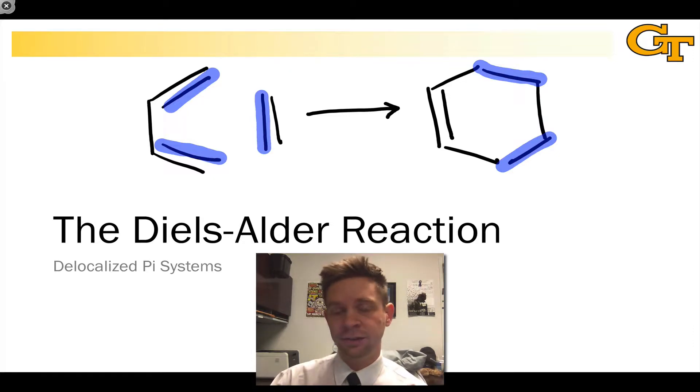It's what we call a pericyclic reaction. In this series of videos, we're going to explore the Diels-Alder reaction in detail. It has very high synthetic utility because it builds up a complex molecular framework, a six-membered ring containing a double bond, from simpler separated starting materials.